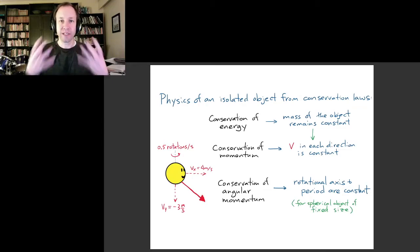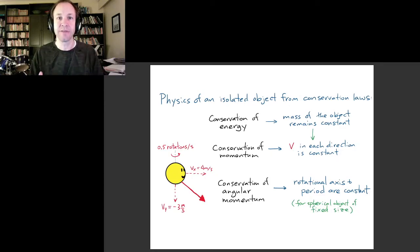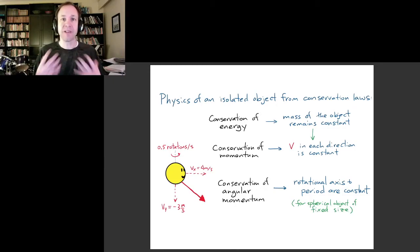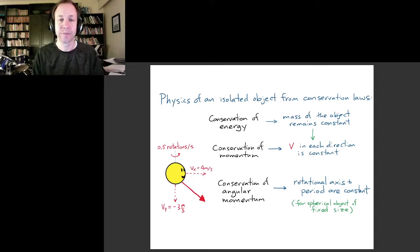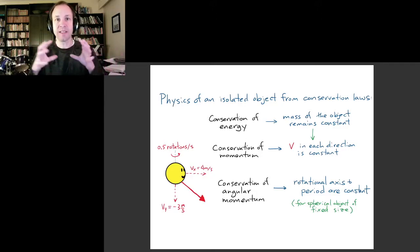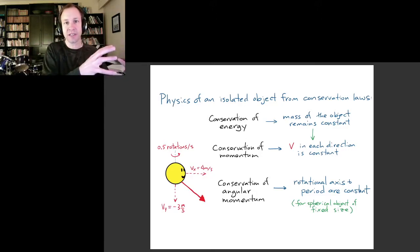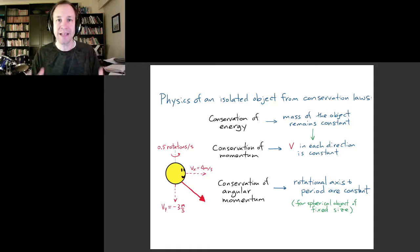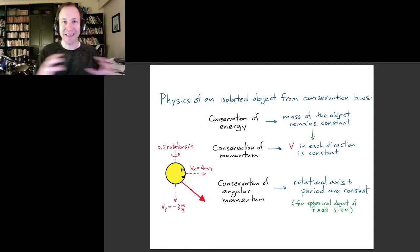If you have an environment which is unchanging in time, there's a quantity called energy which is conserved. If you apply that to a stationary isolated object, its energy is just its mass times the speed of light squared, so energy conservation tells you the mass of an isolated object must stay constant. If you have an environment with translational symmetry — meaning if you move in some direction the environment looks the same — then we have conservation of momentum in that direction.